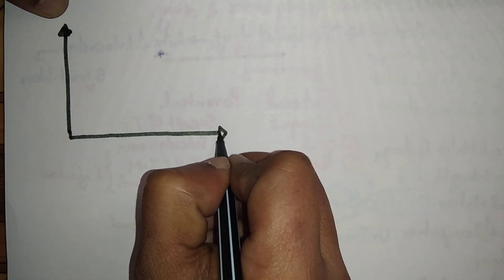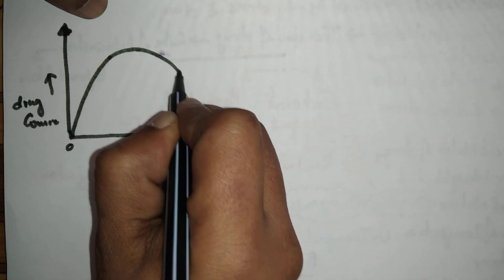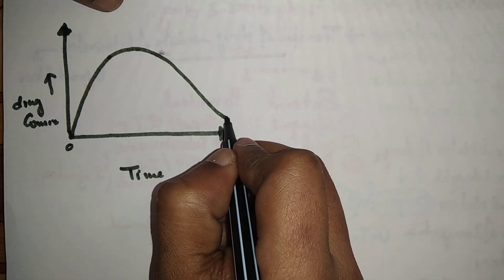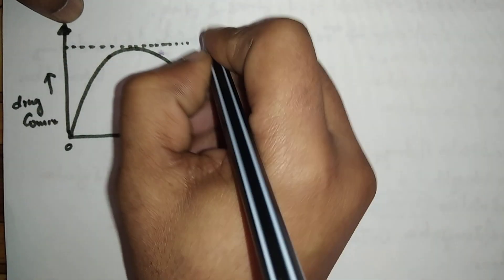One more important concept: if we draw a graph between time and plasma concentration — on the y-axis we have plasma concentration and on the x-axis we have time — at zero time you are taking a drug, it will enter into the body, show its effect, and will start being excreted from the body. The maximum amount that reaches the plasma concentration is known as C max.